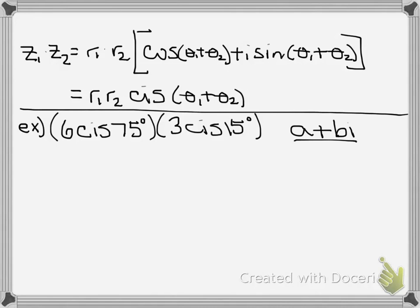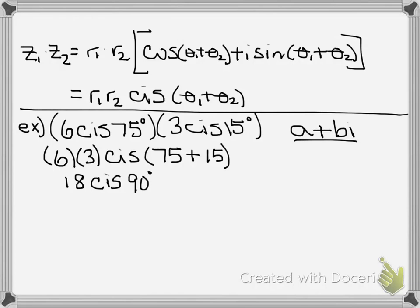We're going to look at r1 times r2. Well, what's r1? That would be 6. What is r2? That's 3. Great. Then we have cis theta1, or 75 degrees, plus theta2, which is 15 degrees. 6 times 3, 18. Cis 75 plus 15, that's 90 degrees.